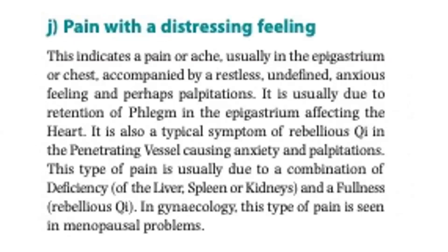Next is pain with a distressing feeling. This indicates a pain or ache usually in the epigastrium or chest, accompanied by a restless, undefined, anxious feeling and perhaps palpitations. It is usually due to retention of phlegm in the epigastrium affecting the heart. It is also a typical symptom of rebellious qi in the penetrating vessel, causing anxiety and palpitations. This type of pain is usually due to a combination of deficiency of the liver, spleen, or kidneys and a fullness — the rebellious qi. In gynecology, this type of pain is seen in menopausal problems.